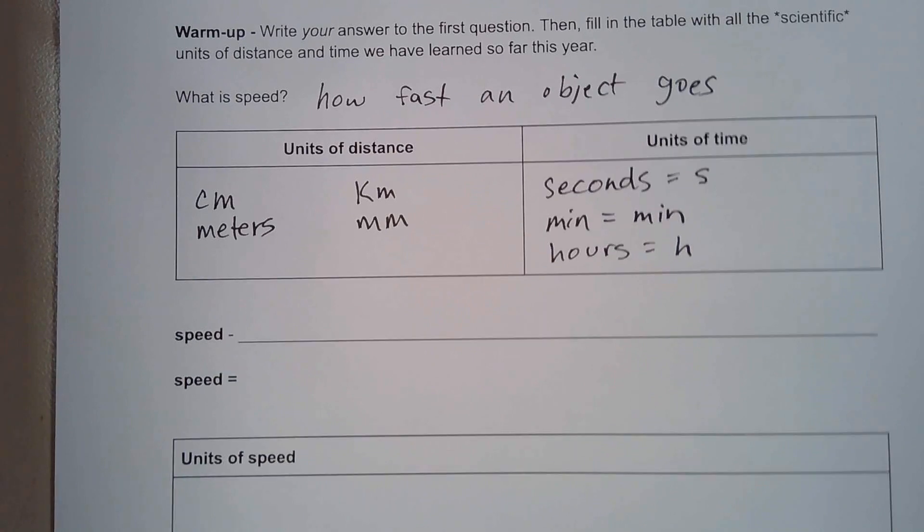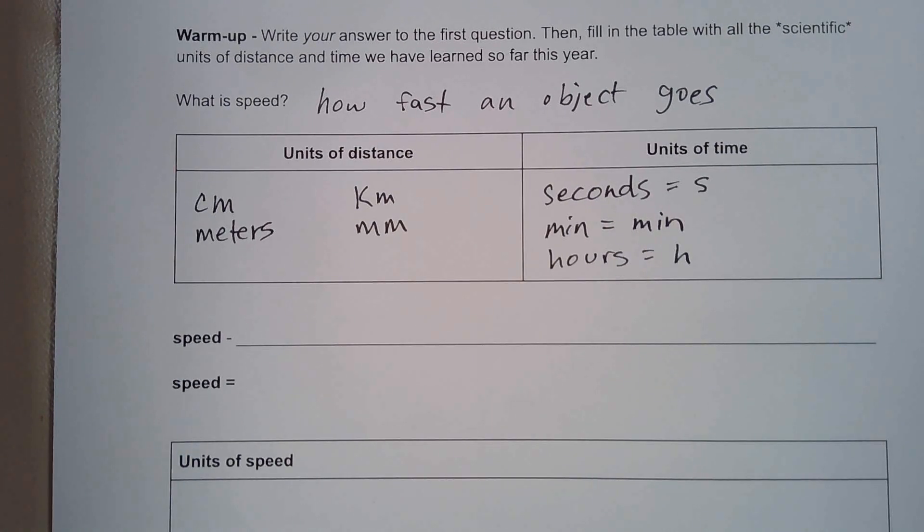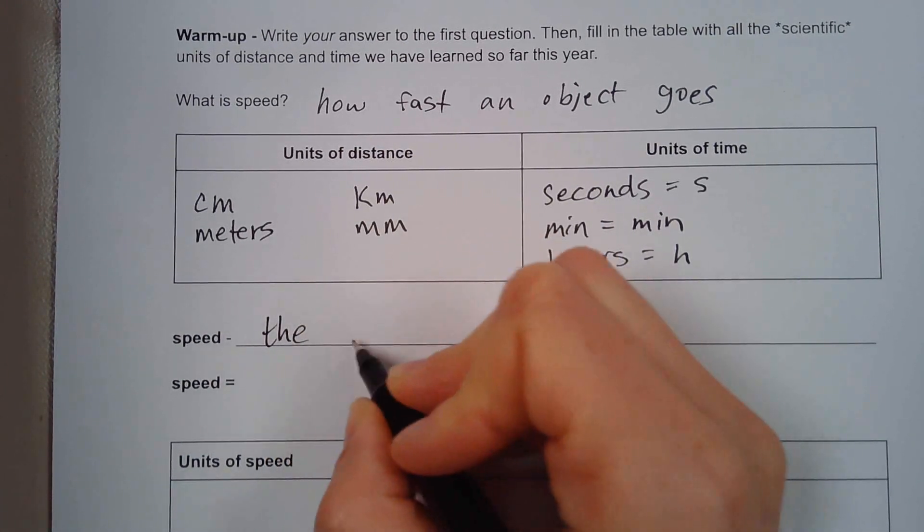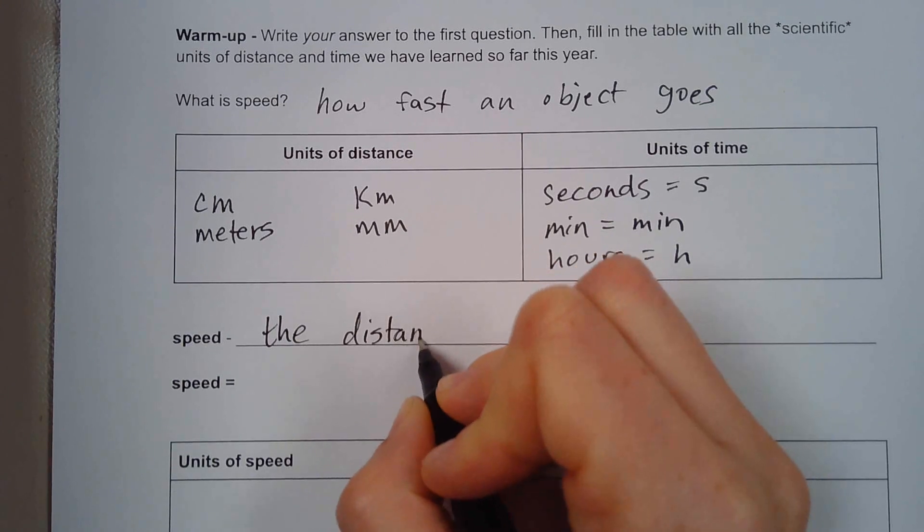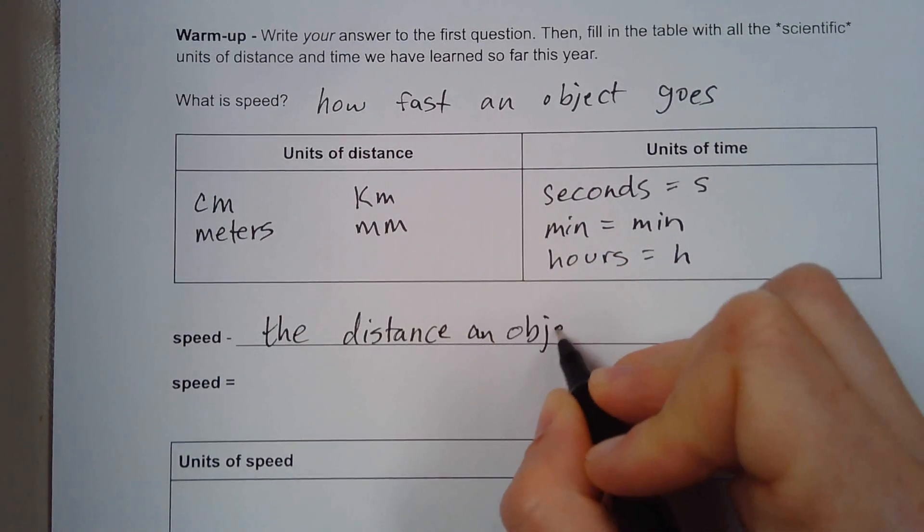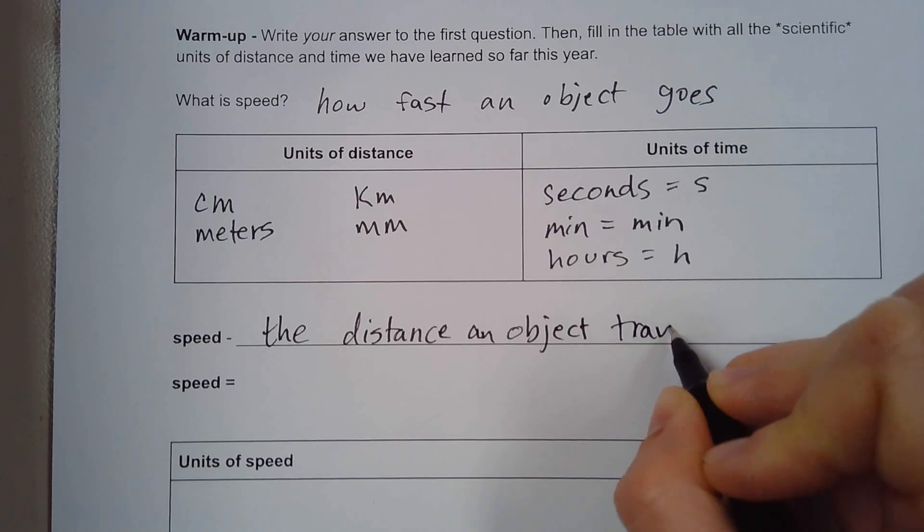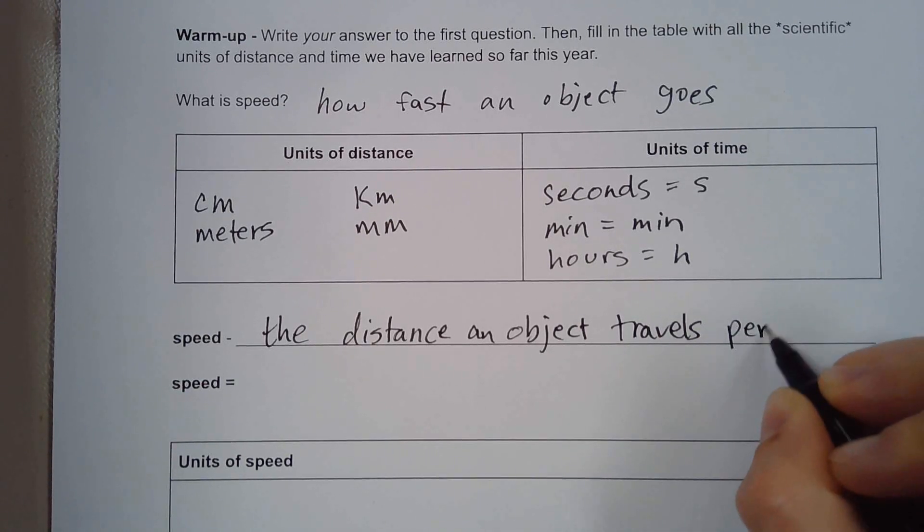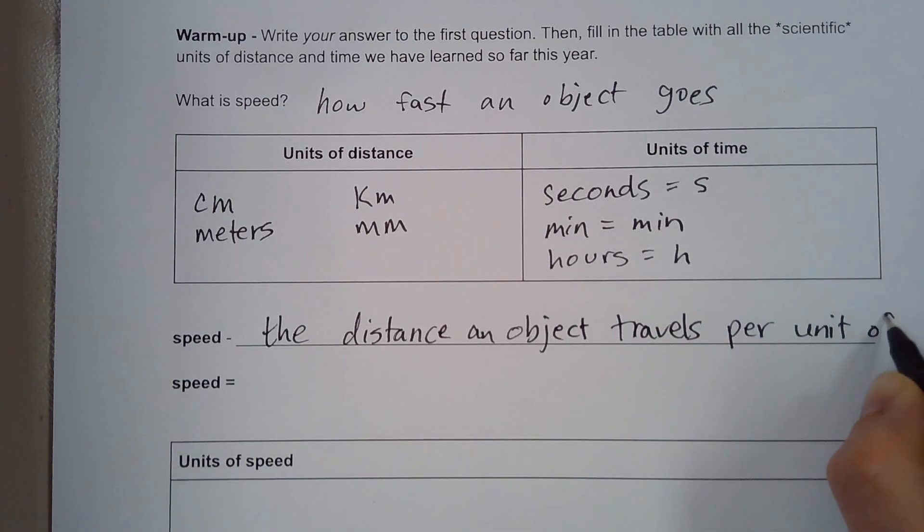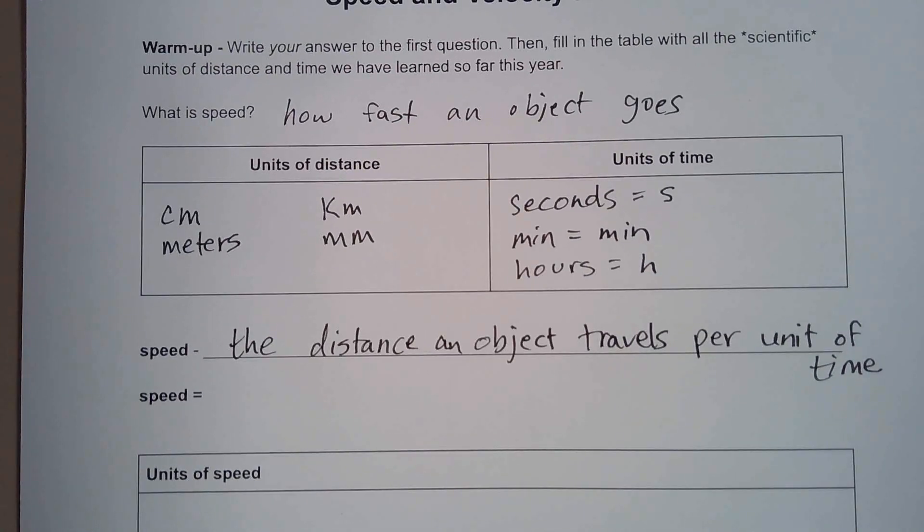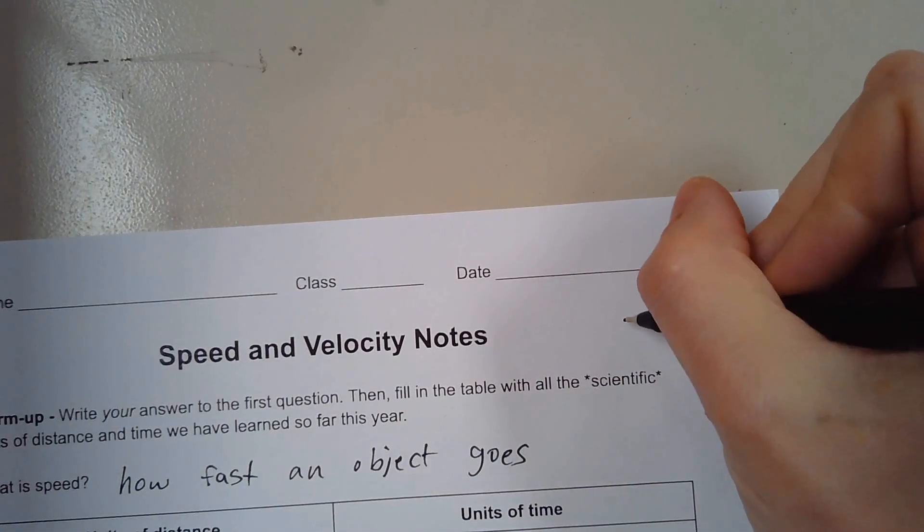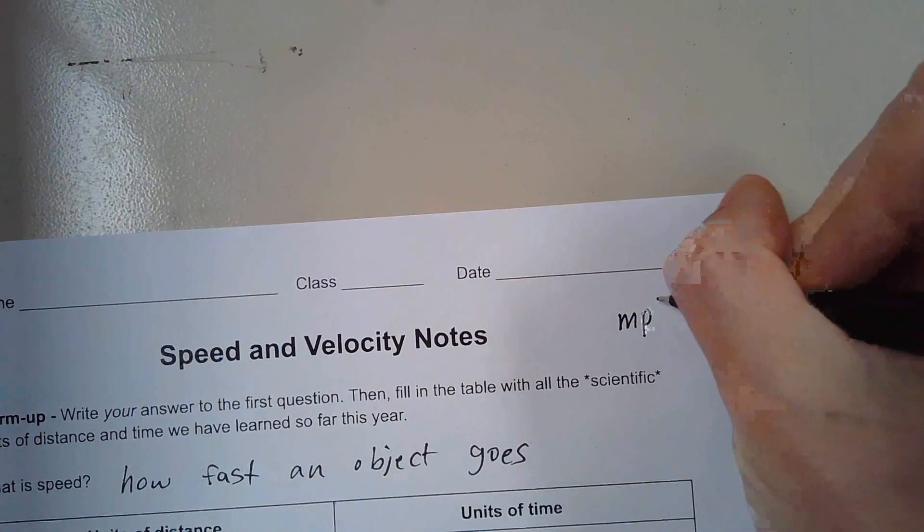The actual definition of speed is the distance an object travels per unit of time. I'm going to just write this up here.